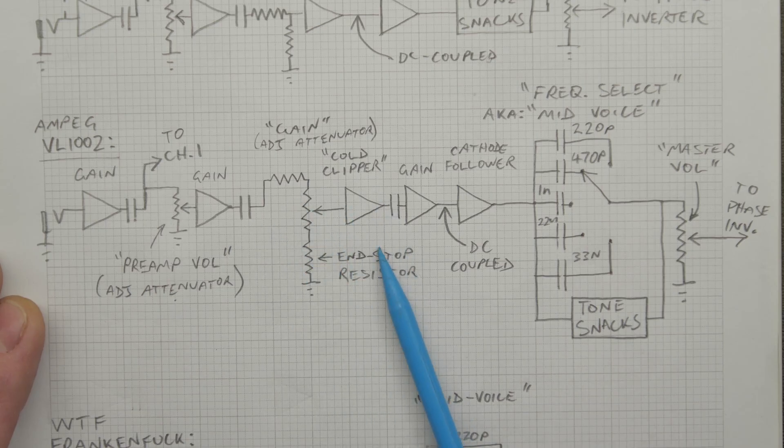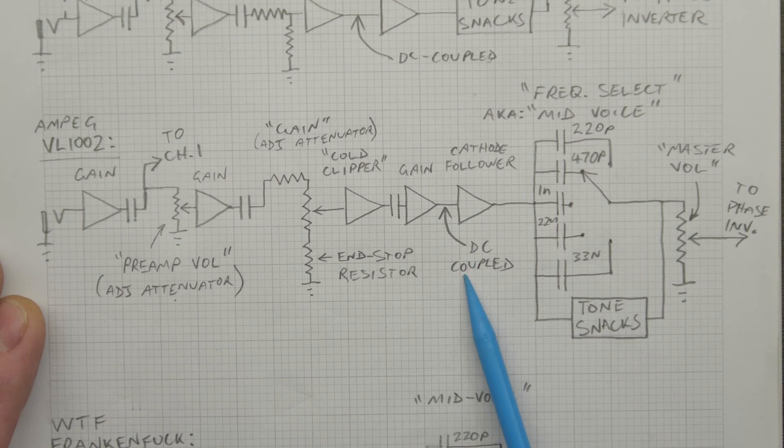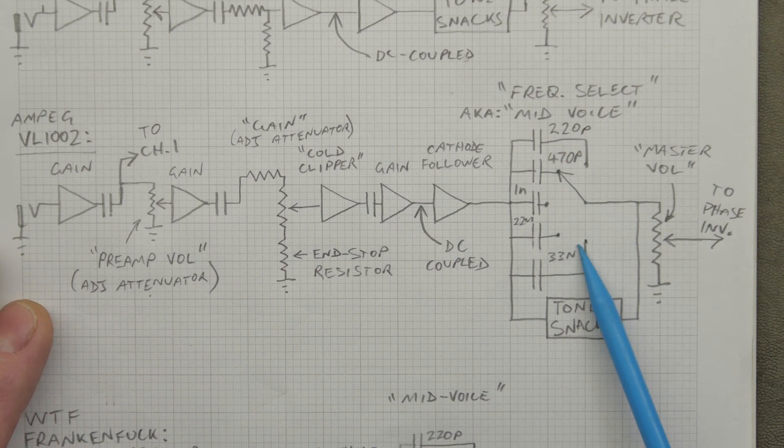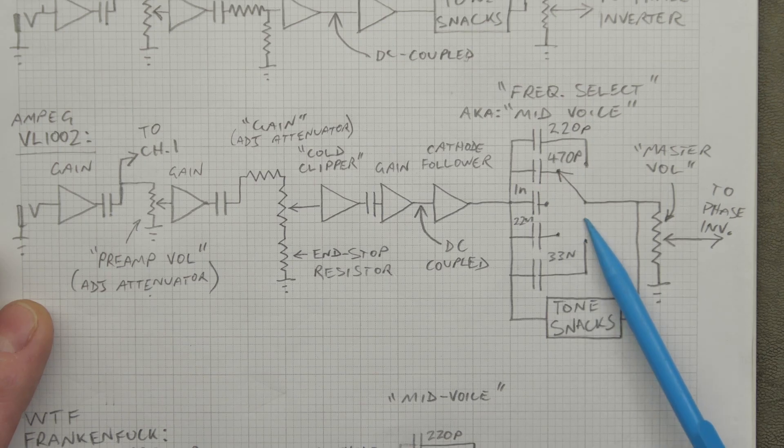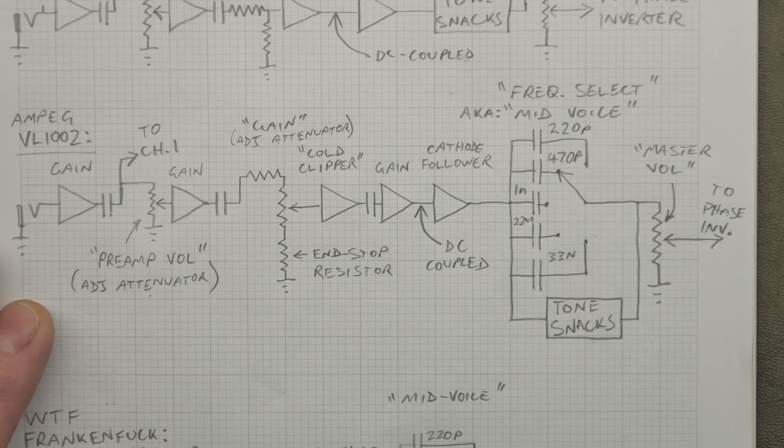And therefore, the amount of saturation into the cold clipper and beyond. And then coupling cap, you've got another gain stage. And then your typical cathode follower set up there, DC coupled. And then you've got the mid-voice switch. Now this had five different selections. And that's the values there, ranging from 33 nanofarad to 220 picofarad. And your tone stack down there, which I've simplified. Your master volume and then off to your phase inverter.